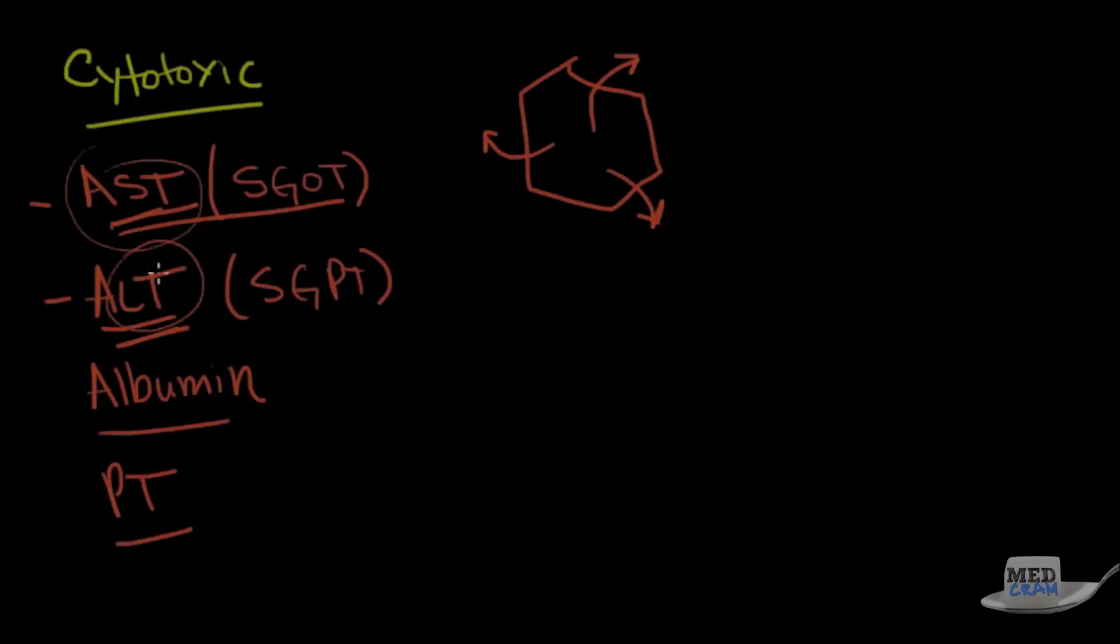So what do we use AST and ALT for? These are basically markers for hepatic inflammation. So hepatic inflammation is tracked by and seen as elevations in the ALT and the AST. So the AST specifically has low specificity for the liver. It's seen in the periportal hepatocytes.